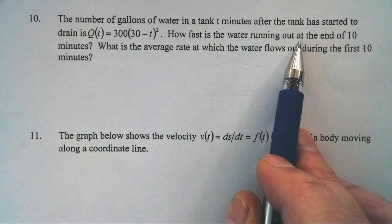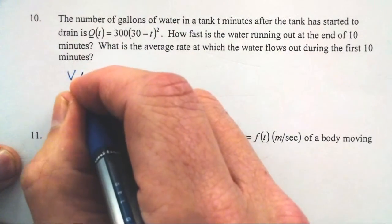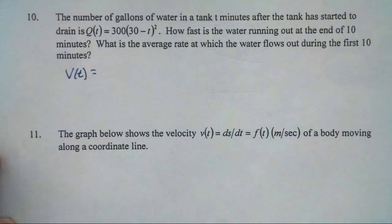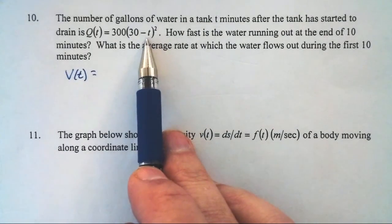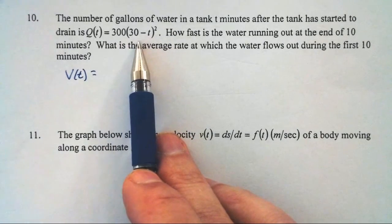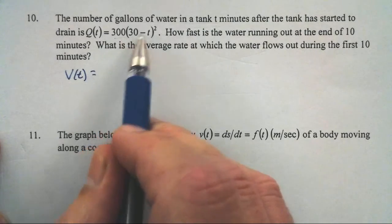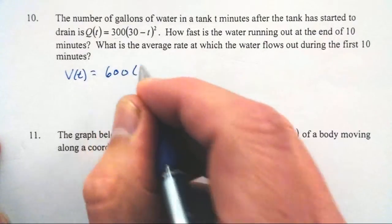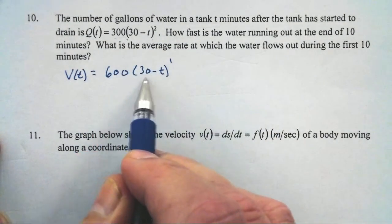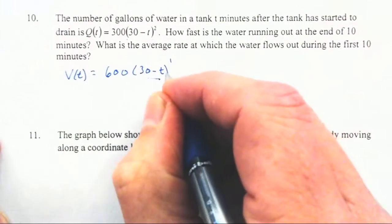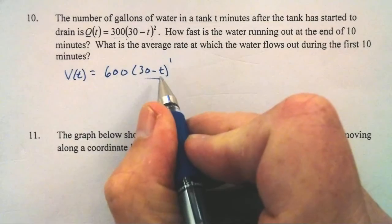That is our velocity function. So we want our velocity function. Now we're at a point in our book where the book is not aware that we know chain rule right now. So to find that, we would have to foil 30 minus t and then distribute the 300. But I'm going to chain rule this. My outside function is 300 times something to the second, so the derivative of that is 600 times something to the first. Then treat the baby function — the derivative of negative t is just negative one.